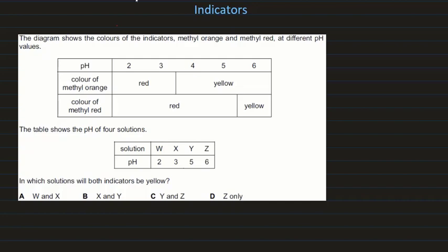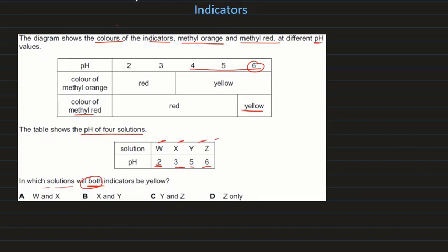The diagram shows the colors of indicators methyl orange and methyl red at different pH values, and four solutions W, X, Y, Z with different pH values. In which solution will both indicators be yellow? Methyl orange is yellow at pH 4, 5, and 6; methyl red is yellow at pH 6. So both being yellow is only possible with solution Z, which has a pH of 6. Z is the answer.